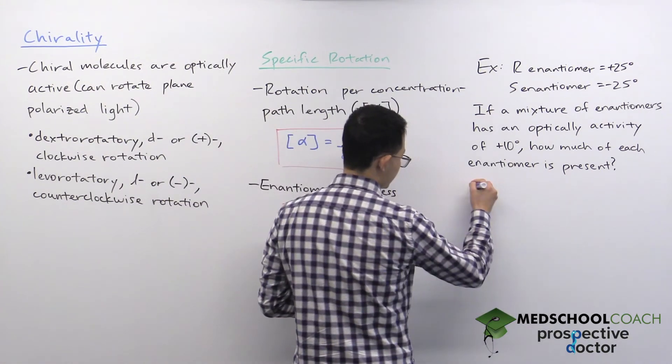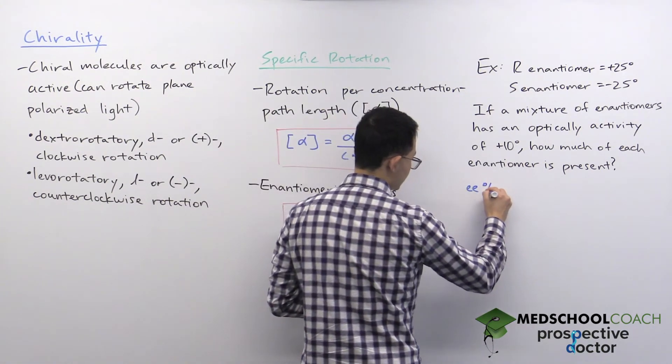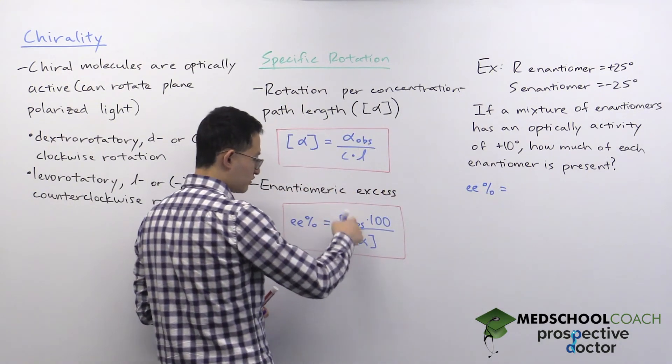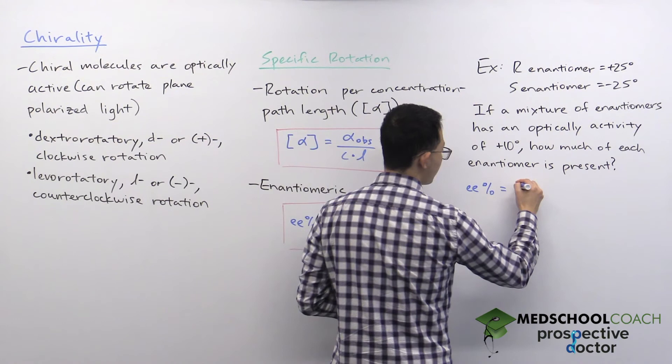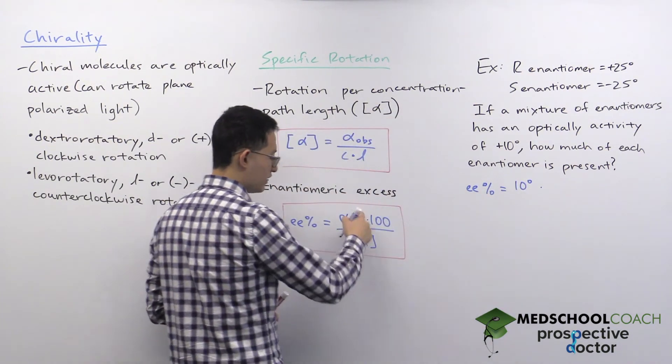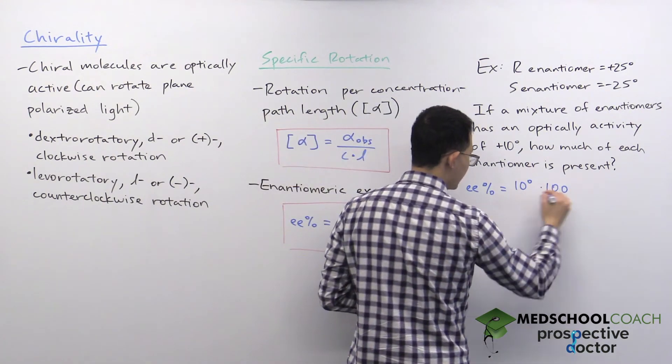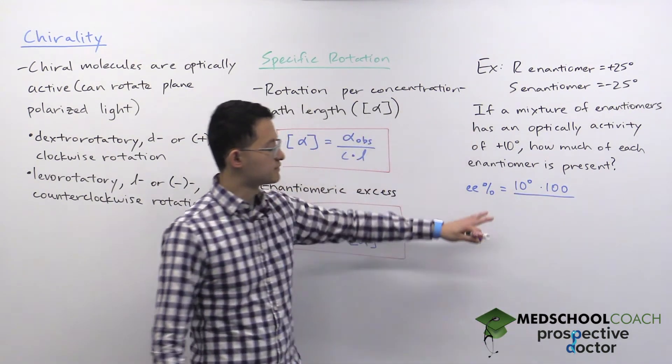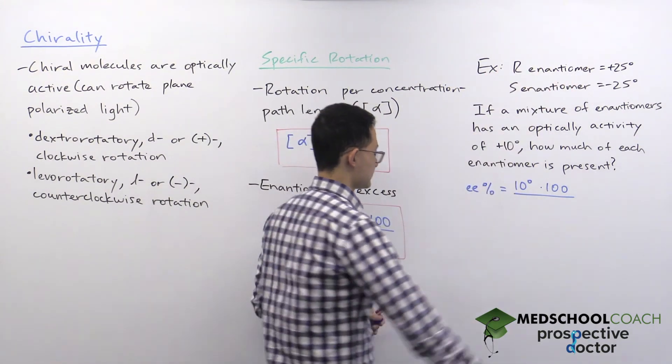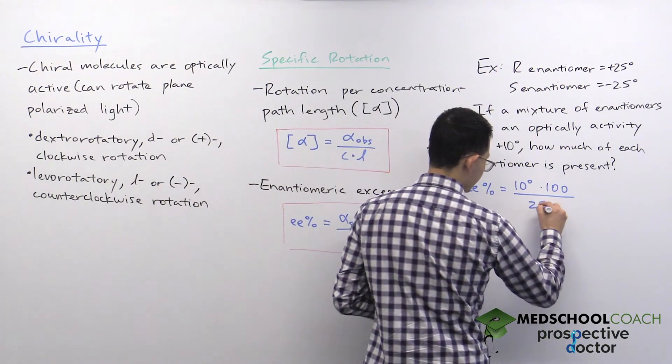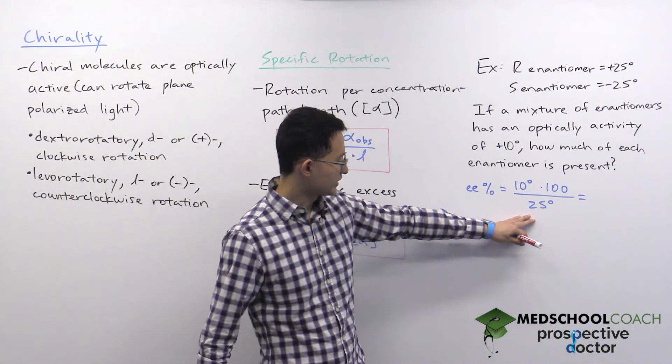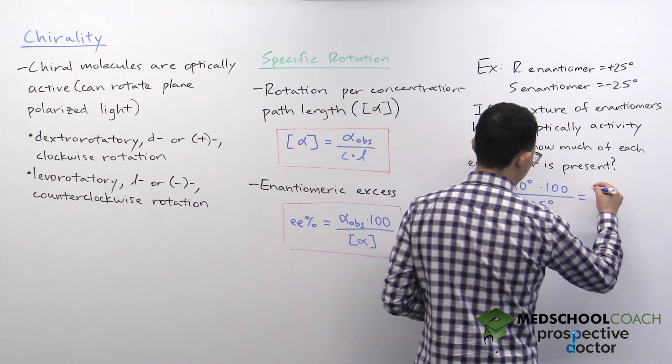Using this equation, the enantiomeric excess is equal to the observed optical activity, which was positive 10 degrees. We would multiply this by 100 and we can divide this by the specific rotation of the enantiomer in excess.